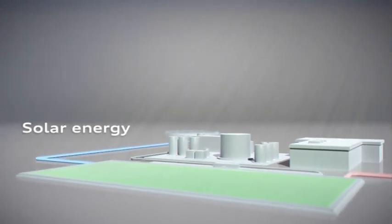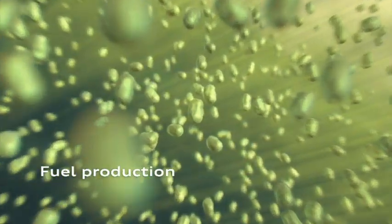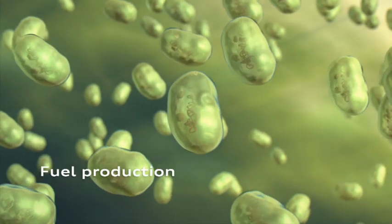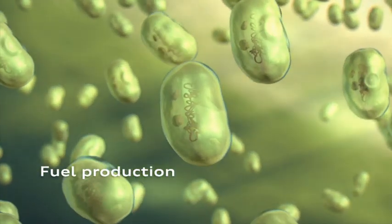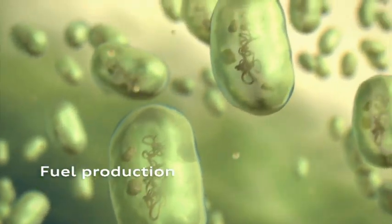The sun provides the process energy that the organisms need to produce the fuel. CO2, water, and solar energy set the circulating production process into motion in which billions of microorganisms produce fuel.